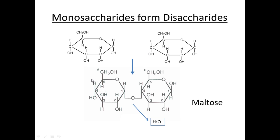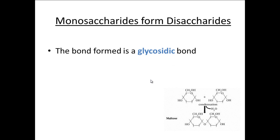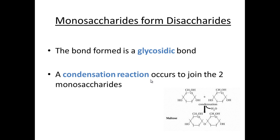This molecule is the disaccharide maltose. The bond produced is called a glycosidic bond — 'glyco' is similar sounding to glycogen, which is a polysaccharide we'll look at in later videos. The bond formed between two monosaccharides is called a glycosidic bond, and it's a condensation reaction because water is produced.